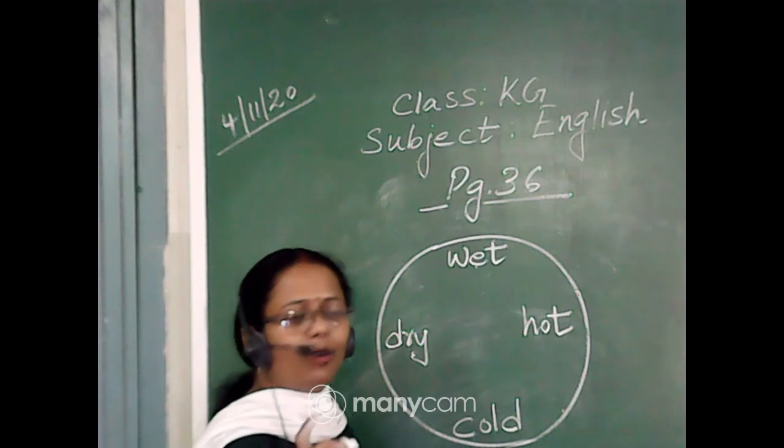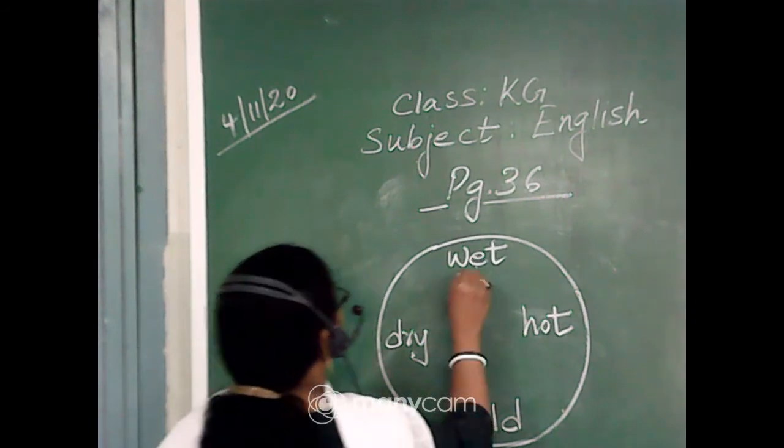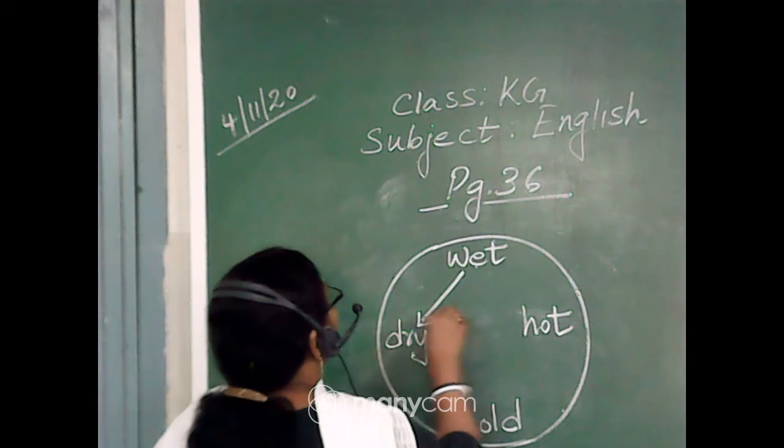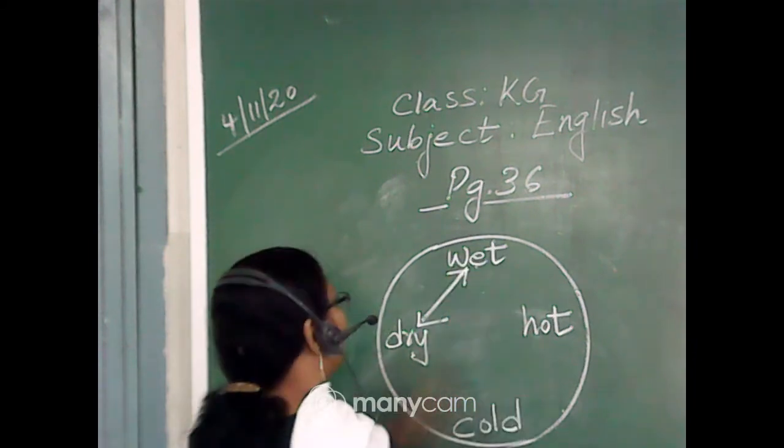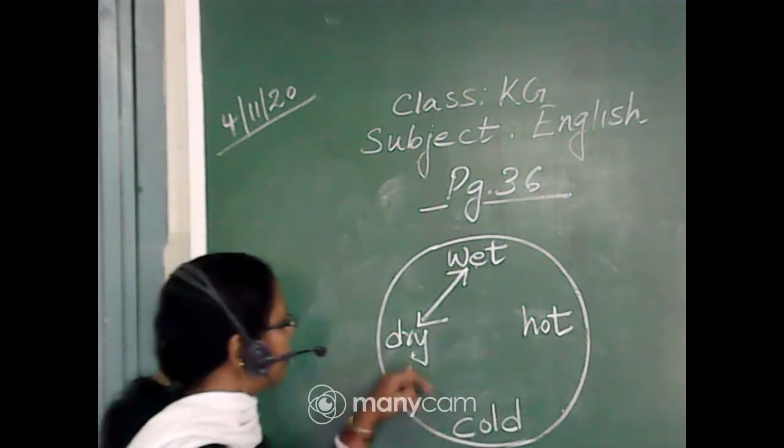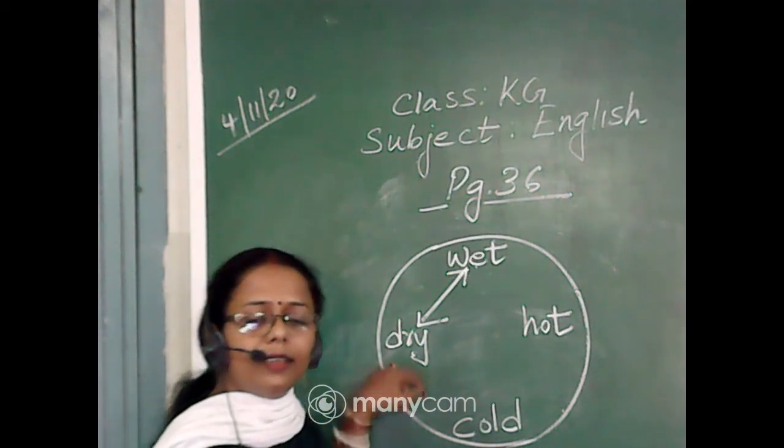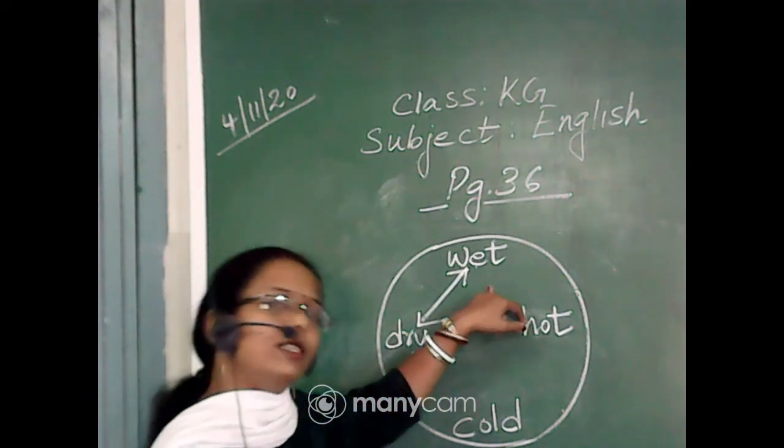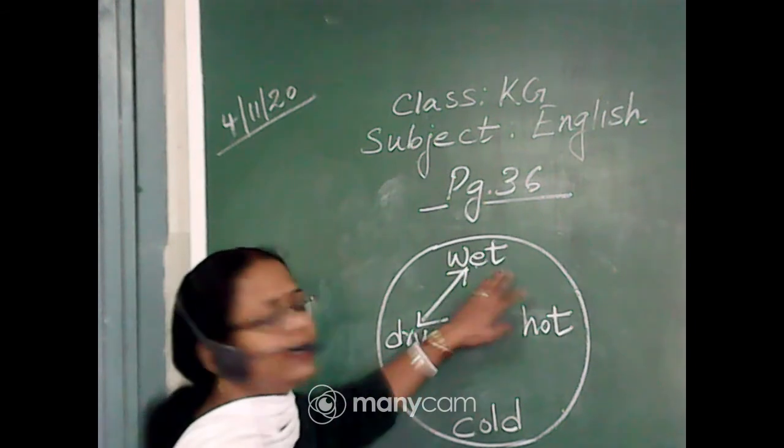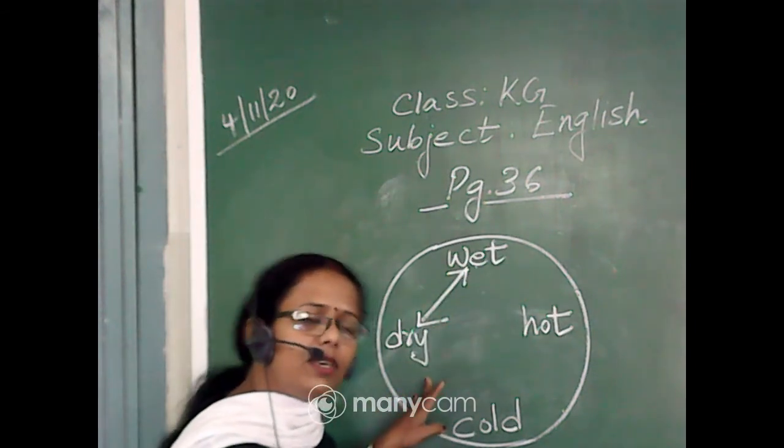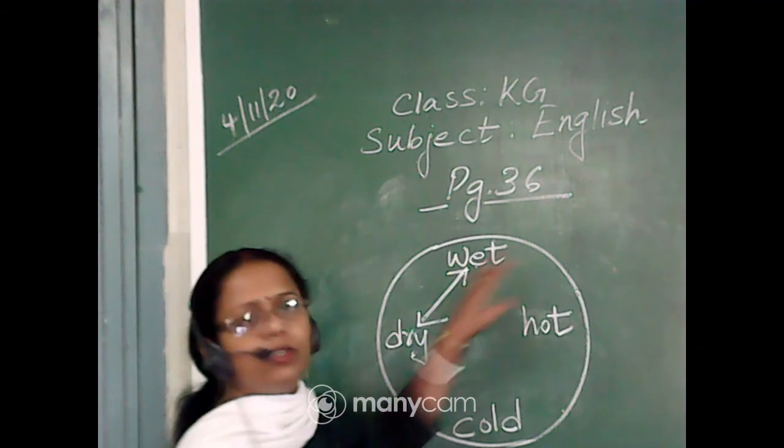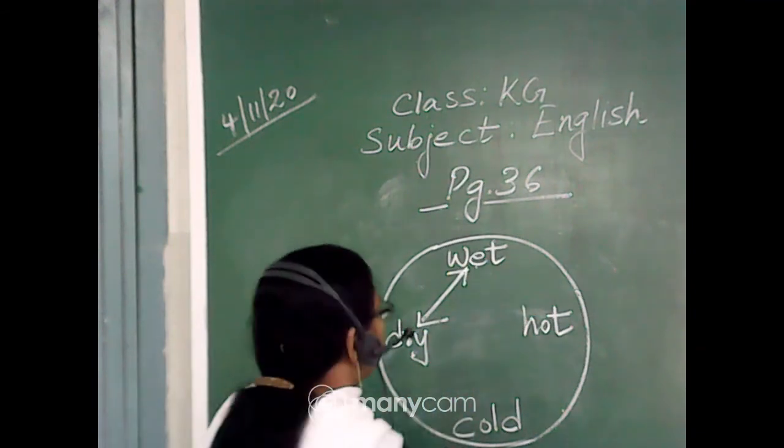I am getting lots of answers over here. And all my students have learned very nicely. Wet is dry. Opposite word of wet is dry. And what is the opposite word of dry? Wet. Vice versa. If it is wet, then it will be dry, opposite word. And if it is dry, the opposite word will be wet.